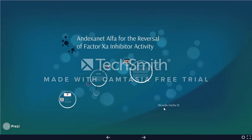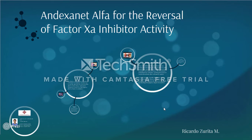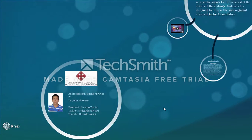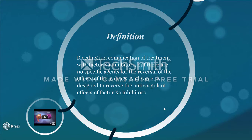Good morning, my name is Ricardo Zurita and I'm going to talk about dexanet alpha for the reversal of factor Xa inhibitor activity. Bleeding is a complication of treatment with factor Xa inhibitors, but there are no specific agents for the reversal of the effects of these drugs. Dexanet is designed to reverse the anticoagulant effects of factor Xa inhibitors.